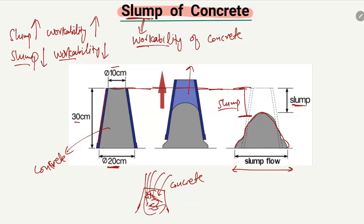This slump value shows the workability of the concrete. It ranges from 10 millimeters to 50 millimeters to 100 millimeters, and also up to 200 or 220 millimeters. There are different classes of slump and different slump requirements for different applications — for example, a dam has a different slump requirement than buildings. A higher slump value means there is a high reduction in height and the concrete is more workable.